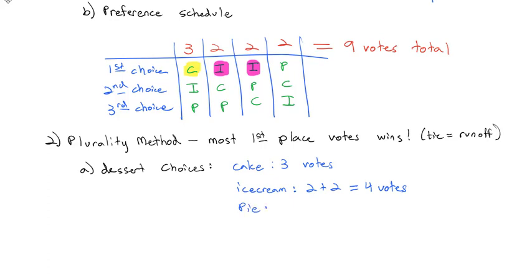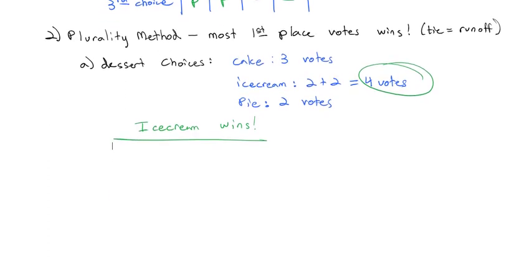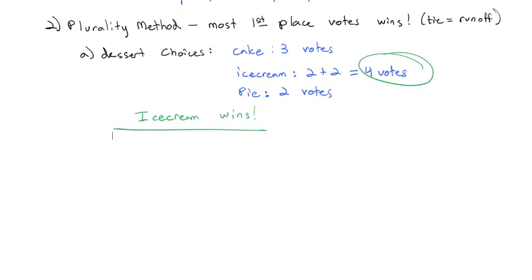And finally, the pie was the preferred result of only two voters. And so if we put that all together, four votes is the most, and therefore ice cream wins. Ice cream got the most first place votes, so therefore ice cream is the best choice for dessert.